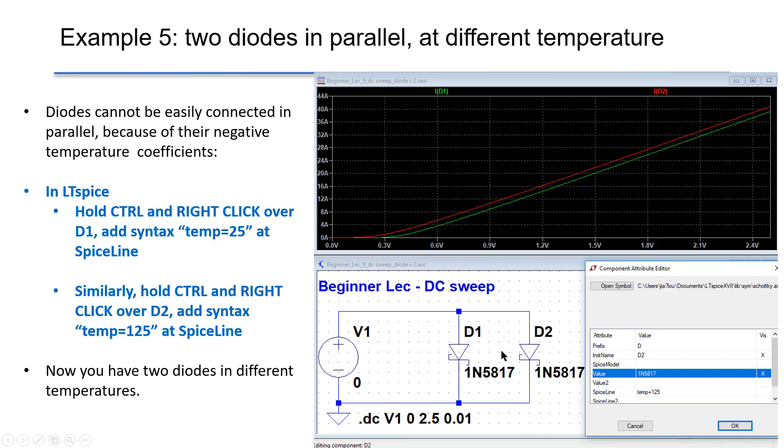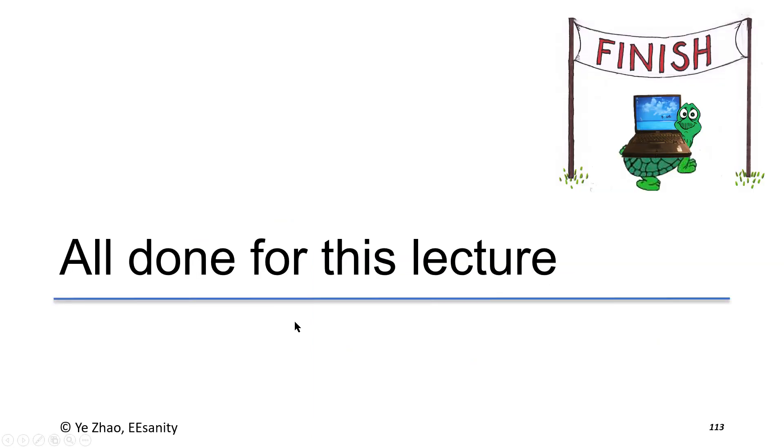Similarly, you can give a different temperature as 125 degrees C at D2. If you run the same DC sweep, you will notice that they have different current because the temperatures are different. For giving the same voltage, diode D2 always conducts more current than D1. So that's all for this lecture. Thank you very much.